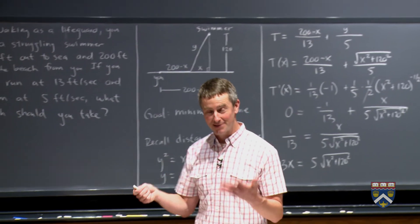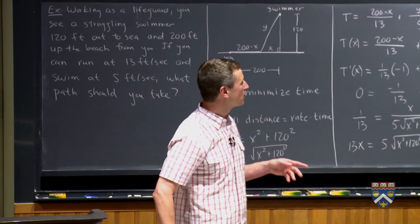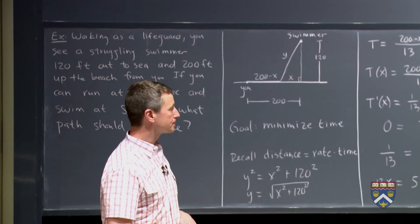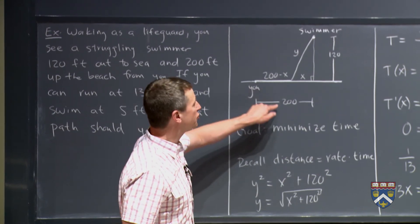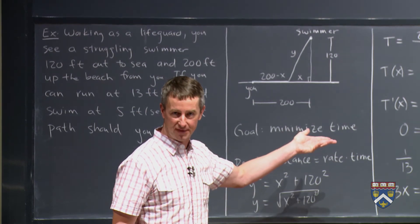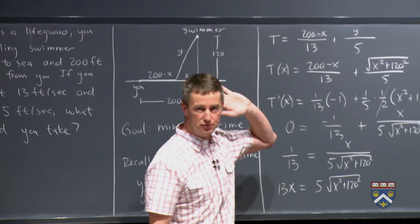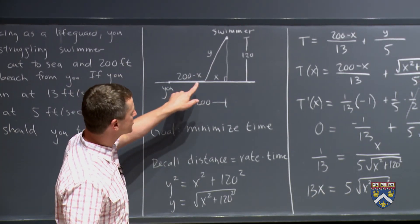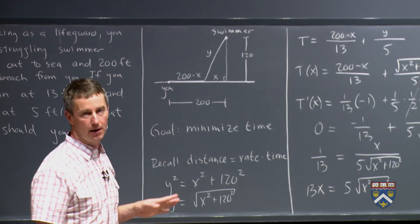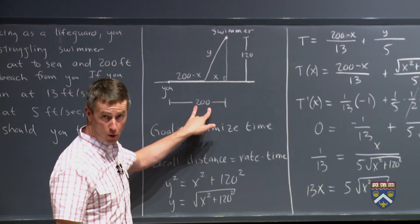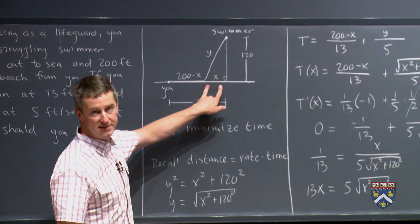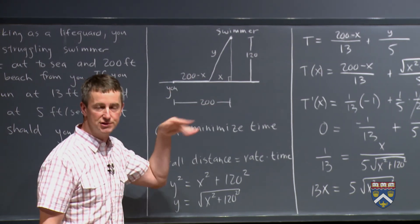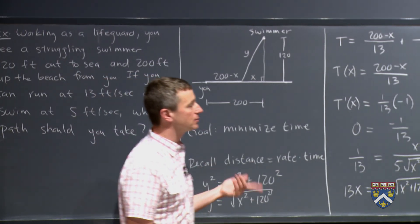And that will save this person's life. At least that's the best way to get there. Now here are a few comments on this. What number, once we took the derivative, made no difference in the problem? The 200. If I had put 2000 here, the answer would still have been x equals 50. Because as soon as I took the derivative here, this 200 was gone. So what that's telling you is that it's really all about this triangle part of the picture. It's not about the running part of the picture. As long as this distance here is more than 50, x will always be 50. If this distance is less than 50, then you should just swim straight to the person.